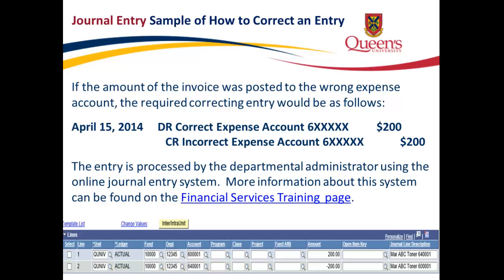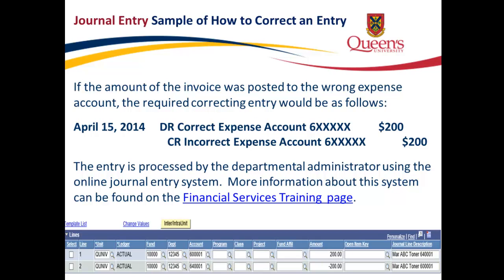Here we see a journal entry sample of how to correct an entry. If the amount of the invoice was posted to the wrong expense account, the required correcting entry would be: debit the correct expense account for $200 and credit the incorrect expense account for $200. The entry is processed by the departmental administrator using the online journal entry system. More information can be found on the Financial Services Training page.